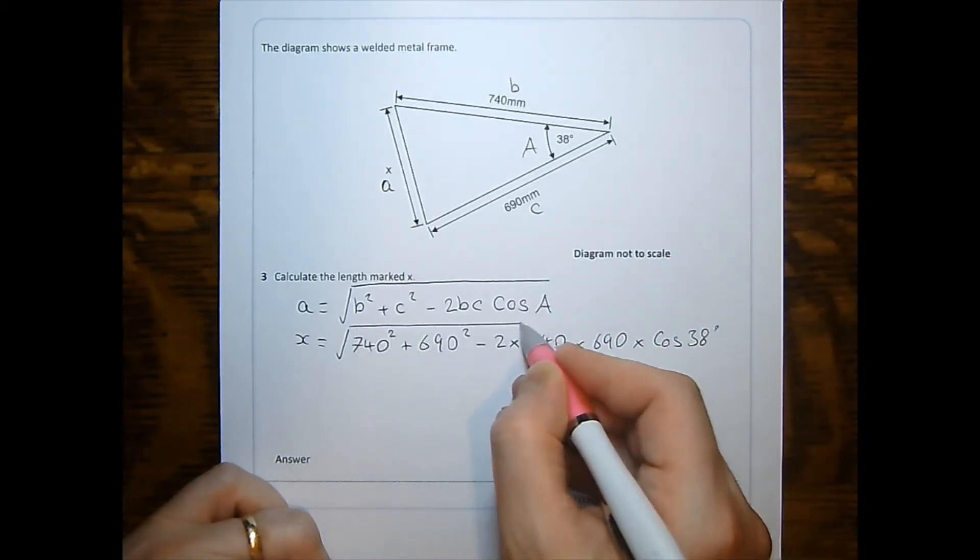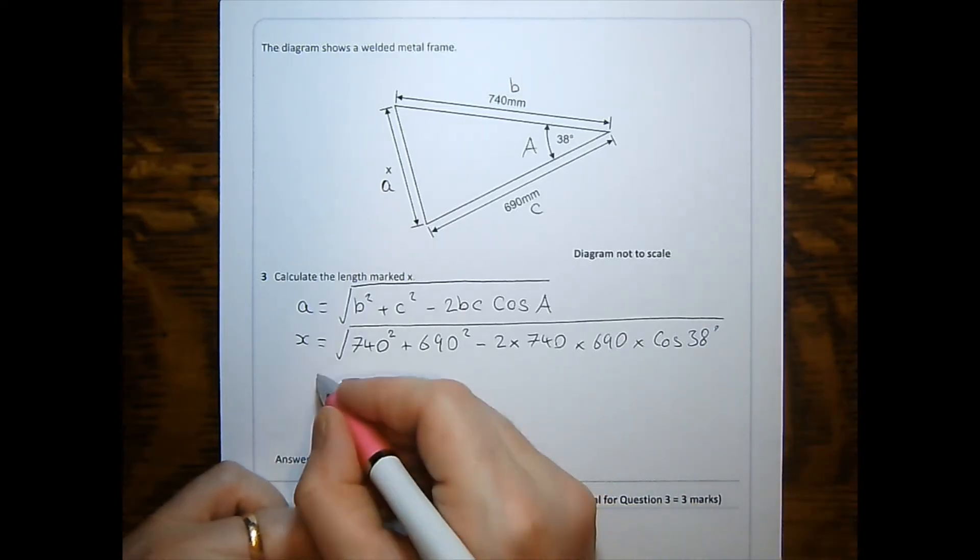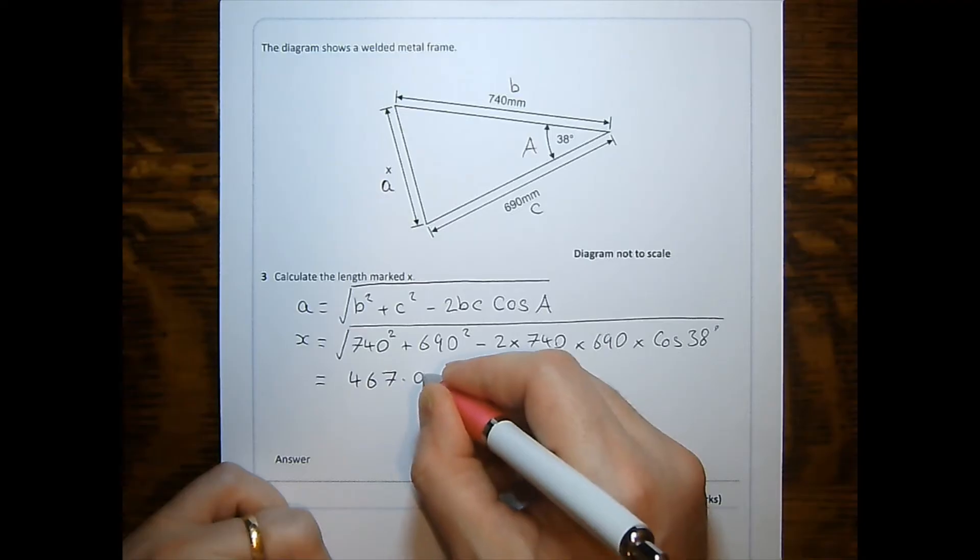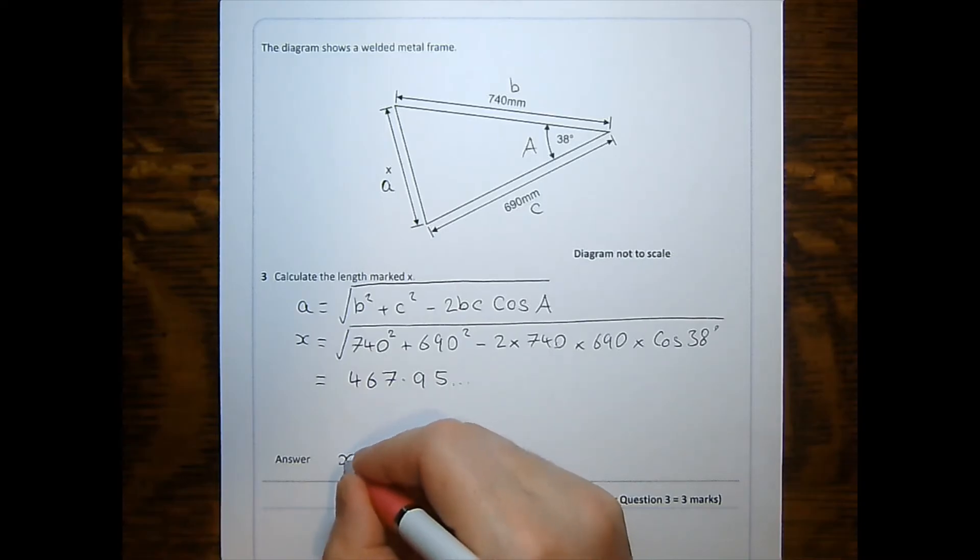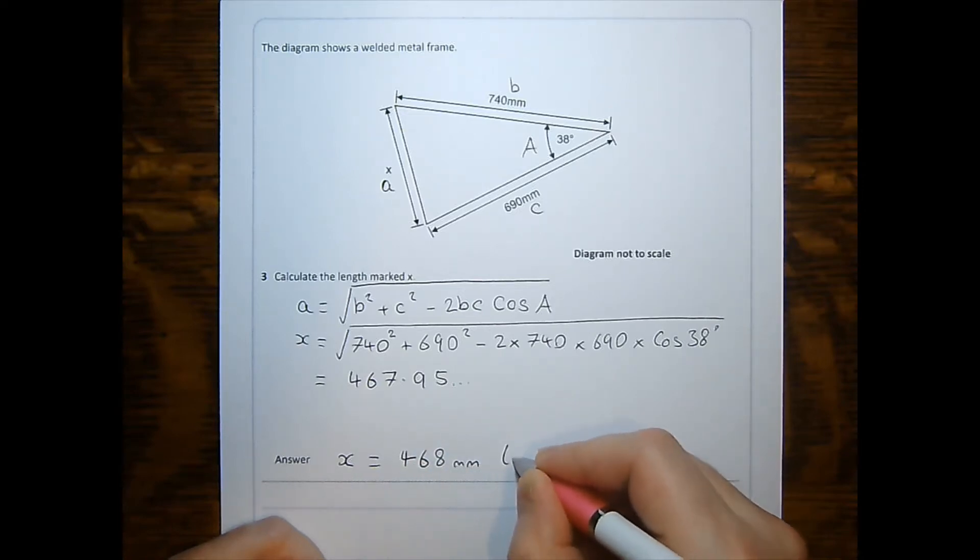Putting all of that into a calculator in one go to avoid rounding error, you get 467.95 etc. And x, therefore, to three significant figures, is 468 millimeters to three significant figures.